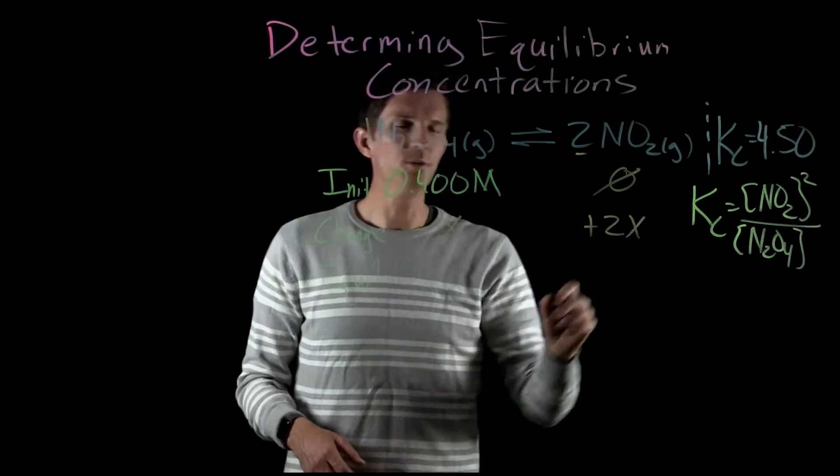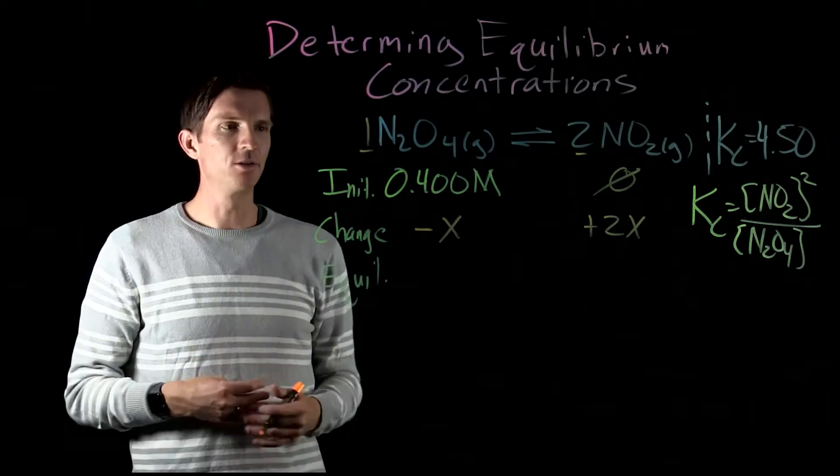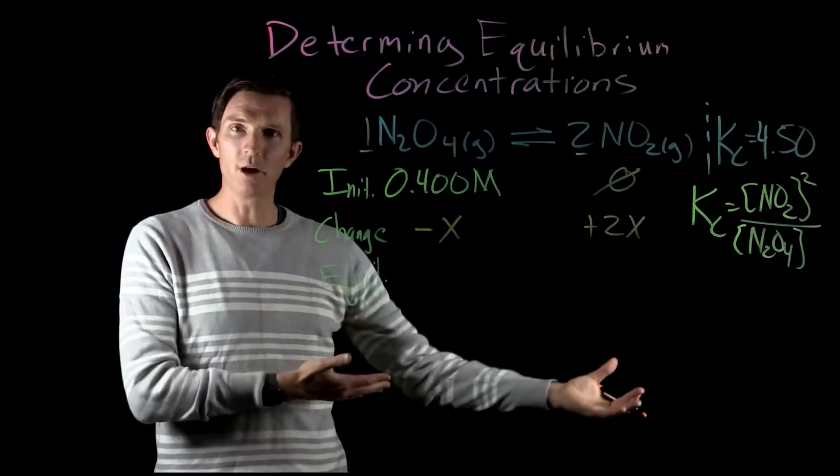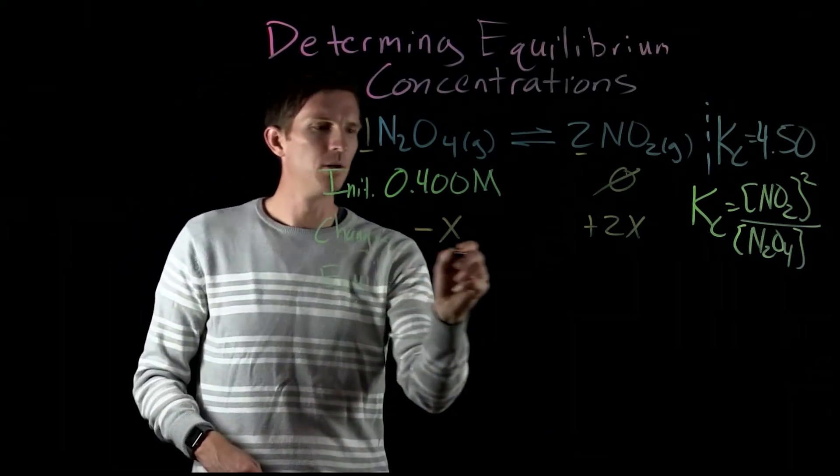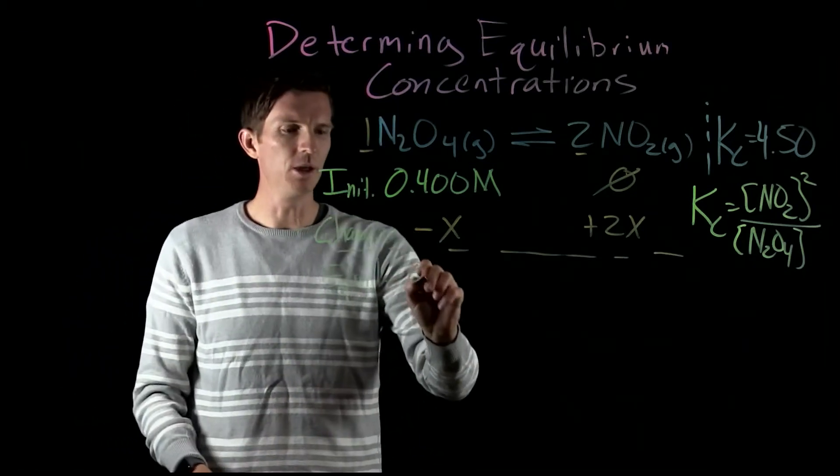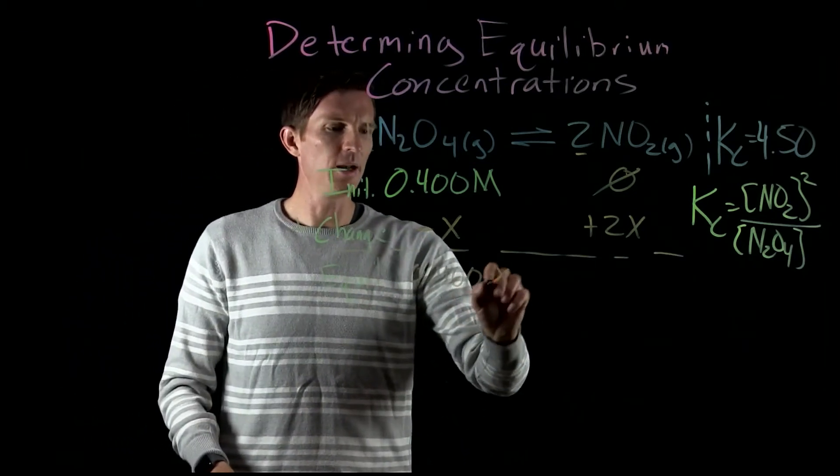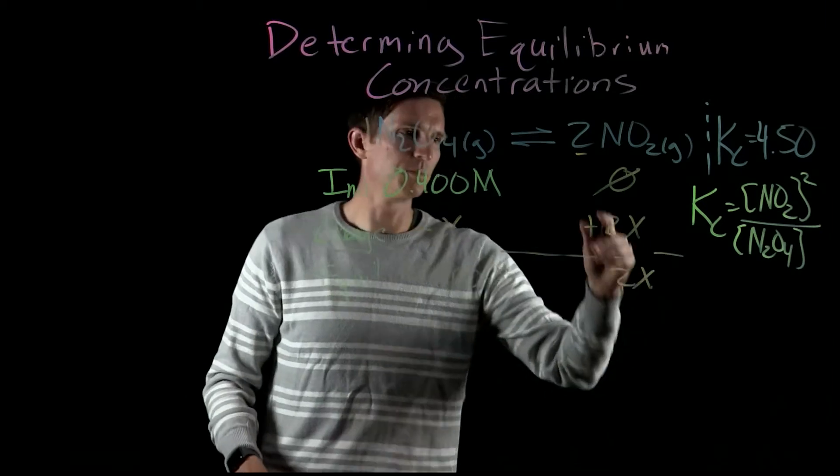Well the equilibrium concentration is going to be the sum of those two, and so that's going to be 0.4 minus X, and this would be 2X plus zero.